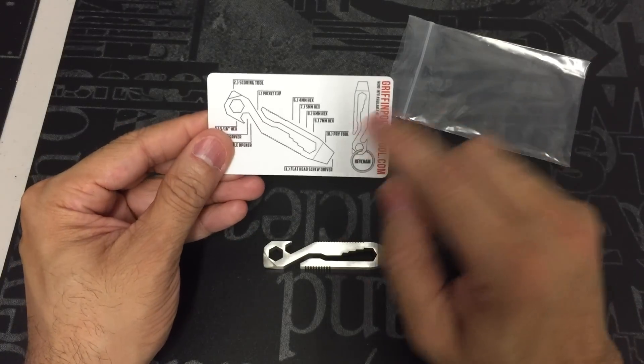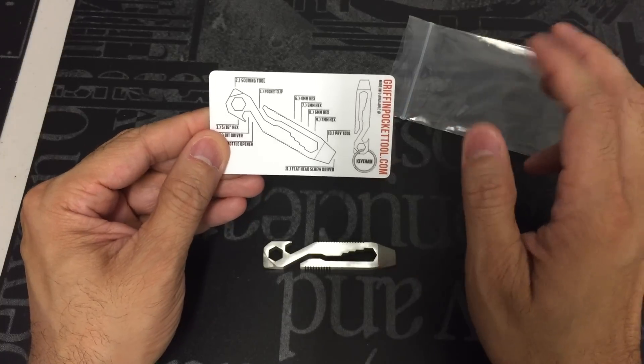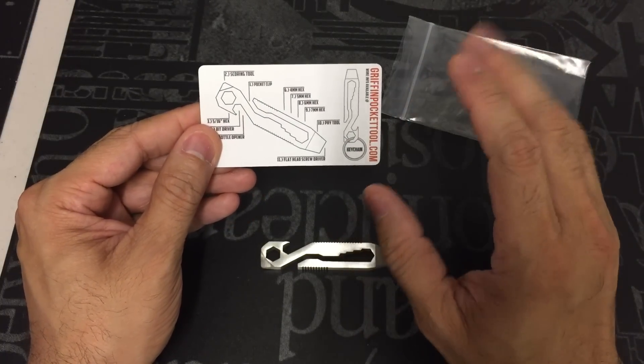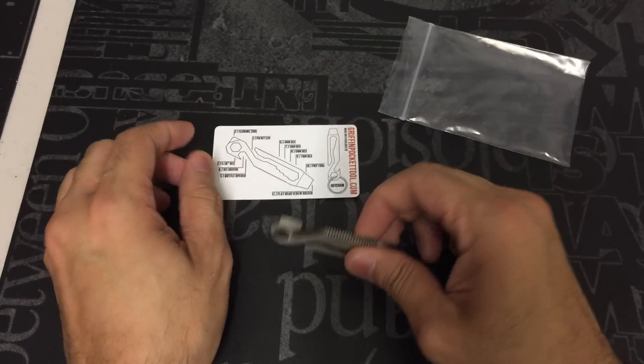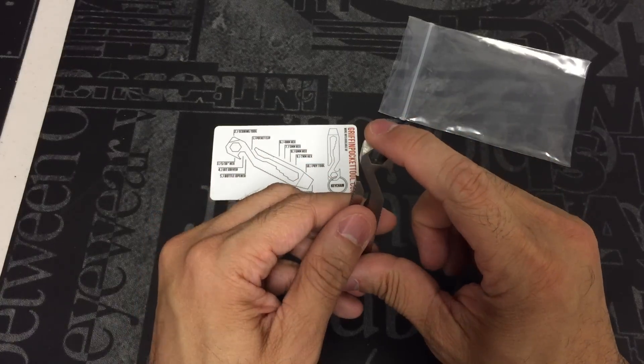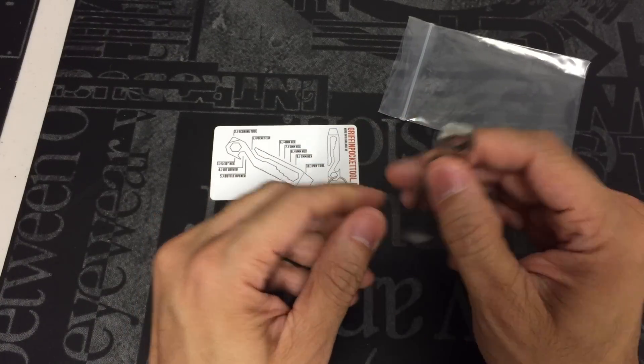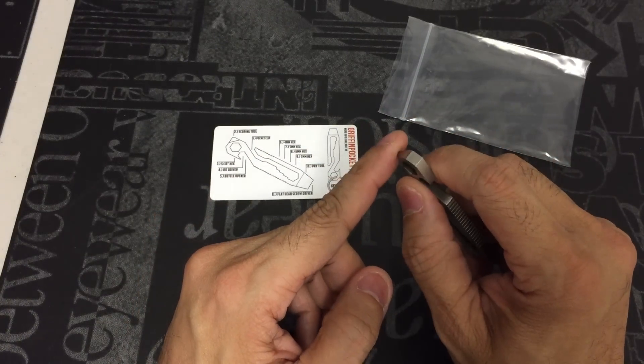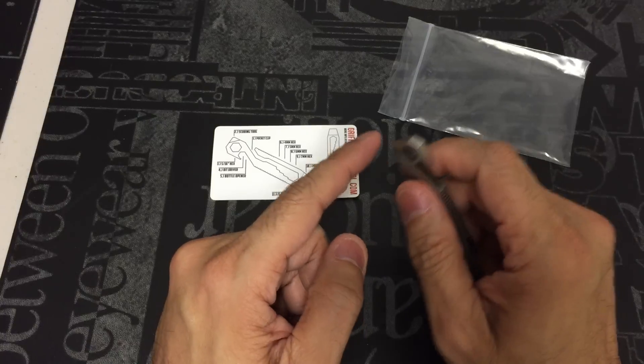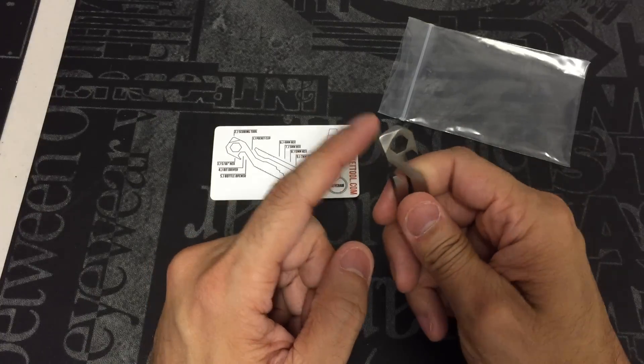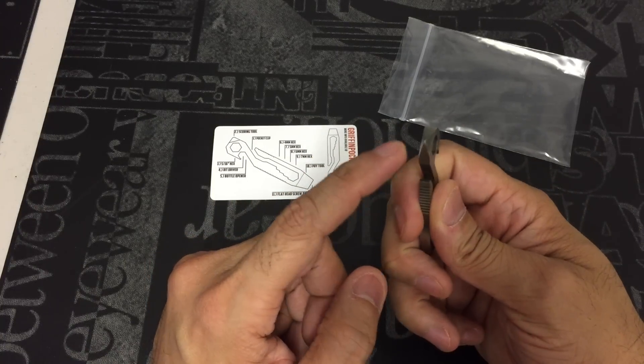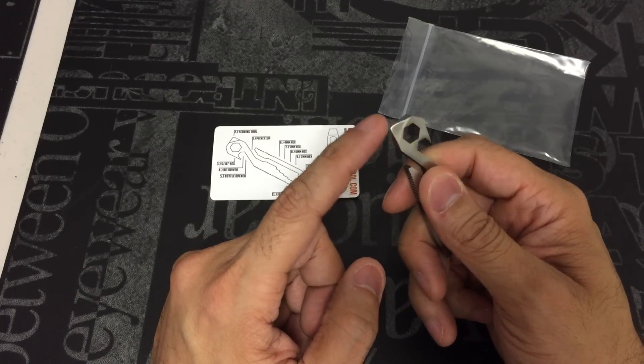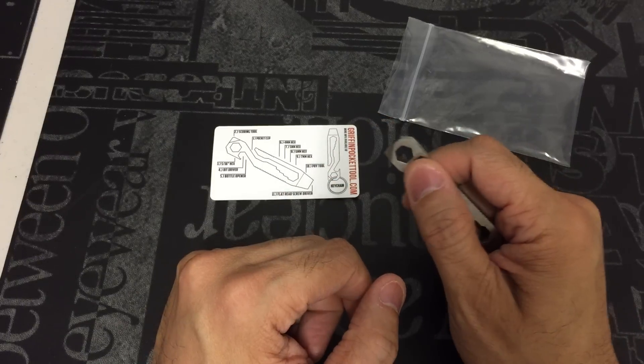It comes with this card that kind of showcases the different tools that are on the pocket tool itself. I believe it's up to 11 different tools. Starting from the top here, you have a scoring tool, which is great if you have to mark any type of surface or score metals, woods, and things like that. It definitely holds up really nice. It's nice and robust. It comes to an okay tip so it definitely gives you a lot of options.